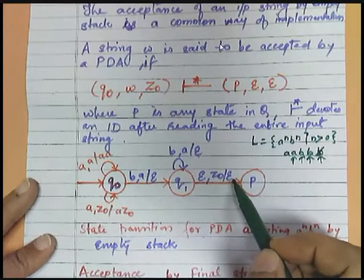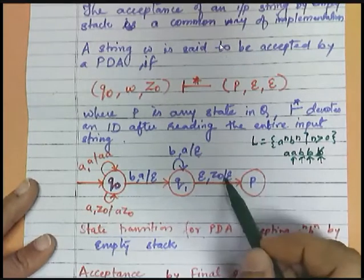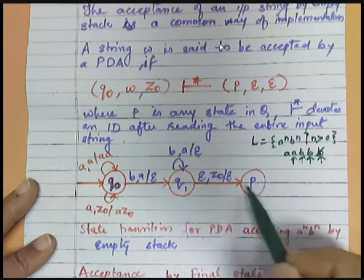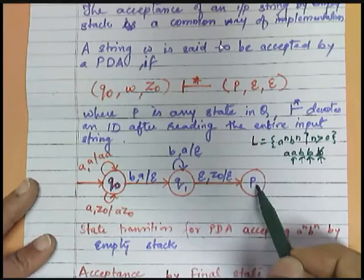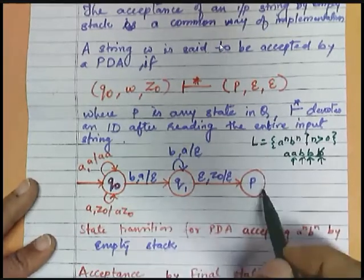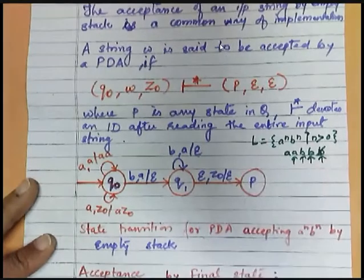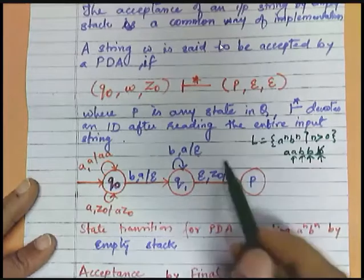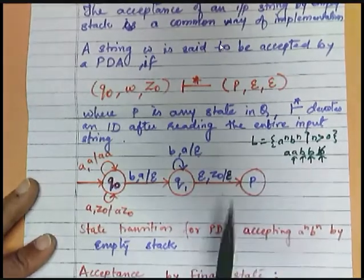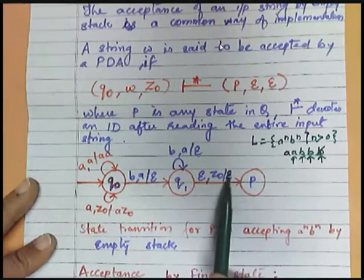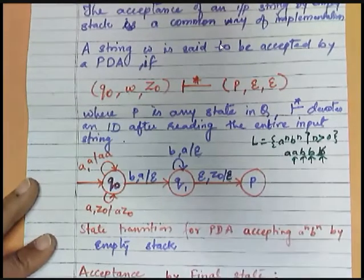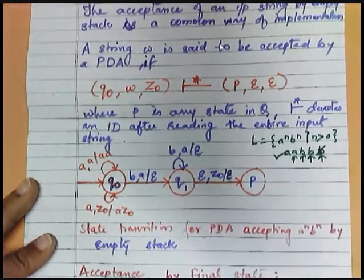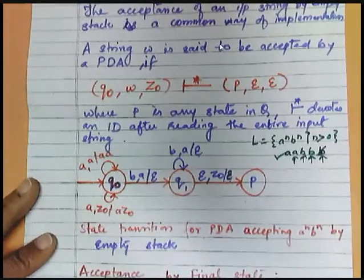After this we have blank, end of the string. So if at q1 state you are getting an empty string, that means nothing has to be checked, and here top of the stack is also z0. So you are doing popping operation, and that popping operation will take you to state P. The state P is not nominated as final or non-final. If you can see, no double circle is indicated. But here this empty is indicating your stack is now empty. After popping, your stack has become empty, and hence we will say that this string is acceptable.